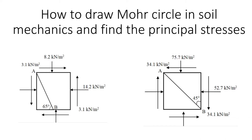This video will explain how to draw Mohr's circles and find the principal stresses acting on a cell element. We're going to look at two examples. Example number one, on the left hand side, shows a cell element with a set of stresses acting on the top and on the right hand side.